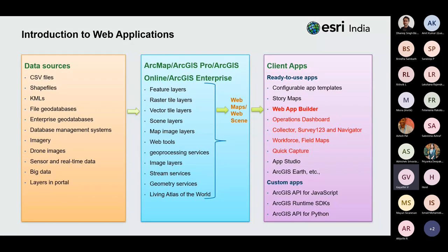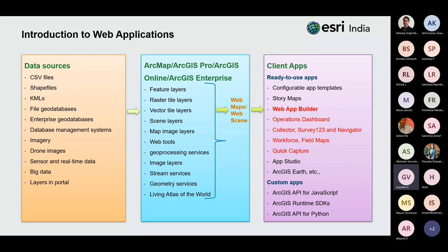From the available data sources, any kind of data layer — such as feature layers, raster layers, vector layers, scene layers, and image layers — can be created through ArcMap, ArcPro, or ArcGIS Online and published as web maps or web scenes. This web map is a starting point where someone who is not a GIS expert can build and deploy web applications using configurable templates, story maps, dashboards, or custom applications using APIs like ArcGIS API for JavaScript and ArcGIS API for Python.